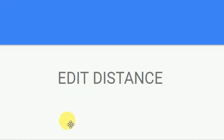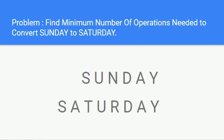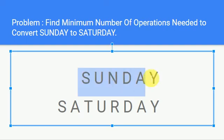Hello guys, welcome back. Let's look at a classical DP problem: Edit Distance. The problem is to convert Sunday to Saturday in the minimum number of operations.